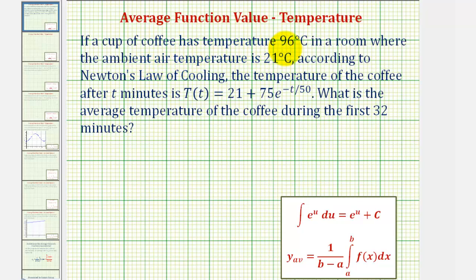If a cup of coffee has temperature 96 degrees Celsius in a room where the ambient air temperature is 21 degrees Celsius, according to Newton's law of cooling, the temperature of the coffee after t minutes is given by T(t). What is the average temperature of the coffee during the first 32 minutes?